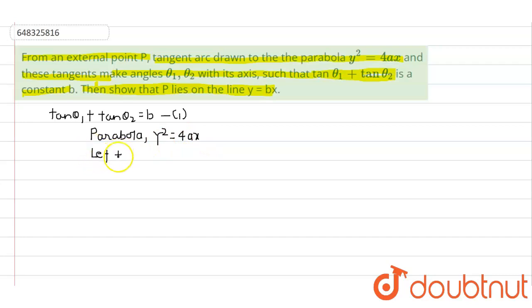Let the two tangents from P be yt₁ = x + at₁². This is the parametric equation of the tangent to this parabola. And yt₂ = x + at₂². These are the two equations of the tangents. We can find the point of intersection of these two tangents.